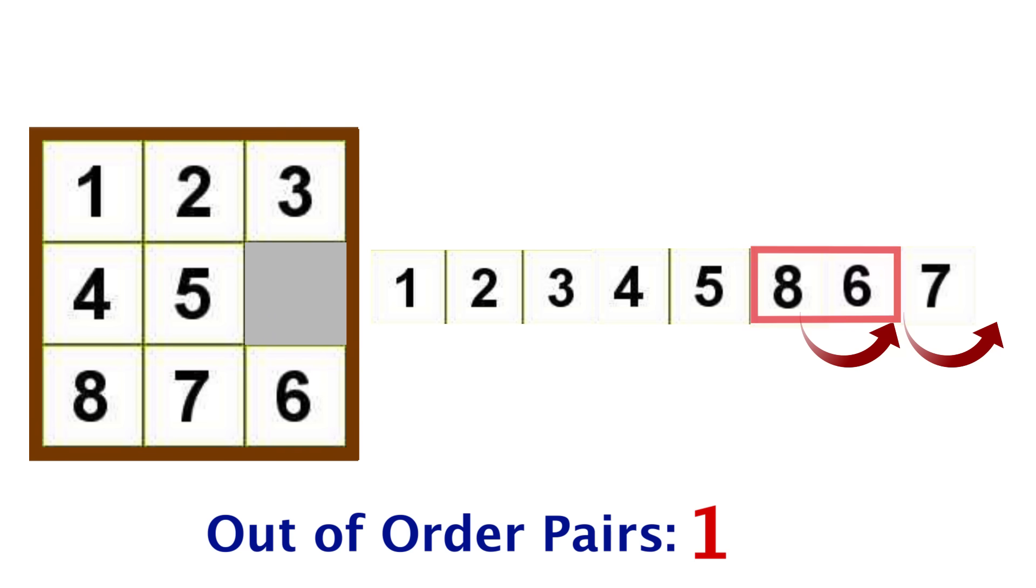Once I move it, they are out of order, and our out of order pairs changes from 1 to 2. But of course we're moving it two spots. It was in order with the 7, but that changes as well, leaving us with 3 pairs out of order.